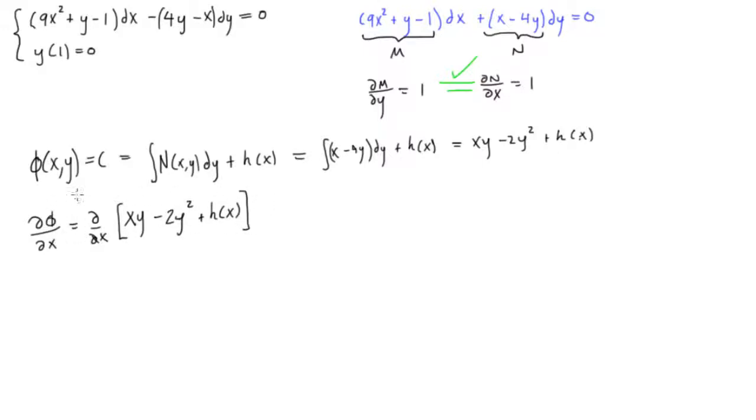Okay, and by the definition in the method for the exact differential equations, we say that this is all equal to M. Again, if we did it the other way, if we were taking the integral of M dx plus g of y, then when we took the partial derivative of that with respect to y, this would all be equal to N. So just showing the two different methods to do it.